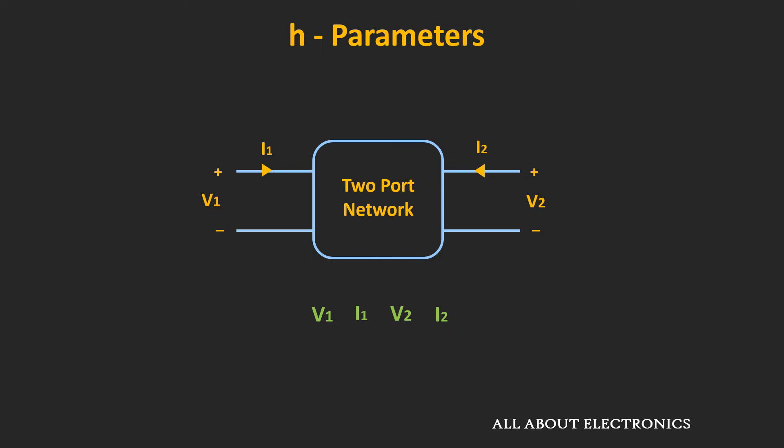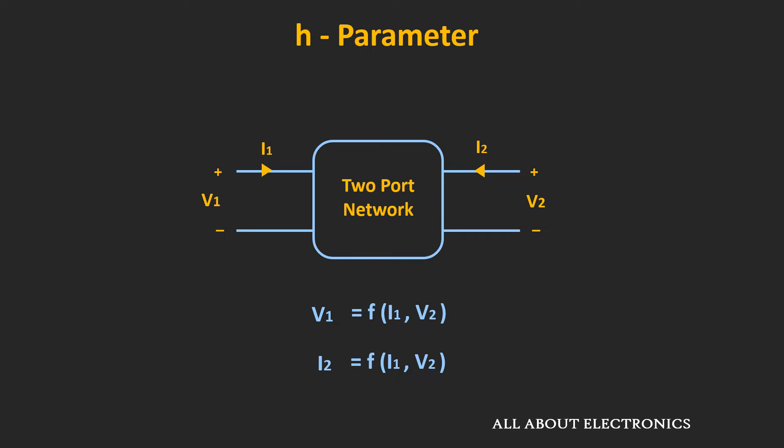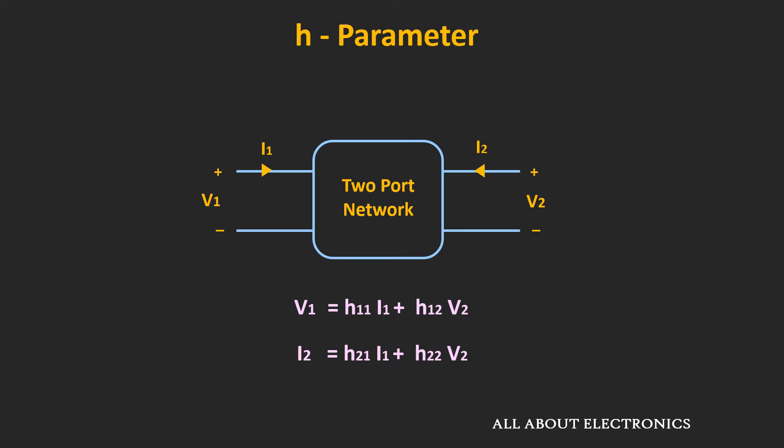For the H parameters, i1 and v2 are the independent variables while v1 and i2 are the dependent variables. That means v1 and i2 are functions of i1 and v2. For the H parameters, v1 can be expressed as h11 times i1 plus h12 times v2. Similarly, i2 can be expressed as h21 times i1 plus h22 times v2.